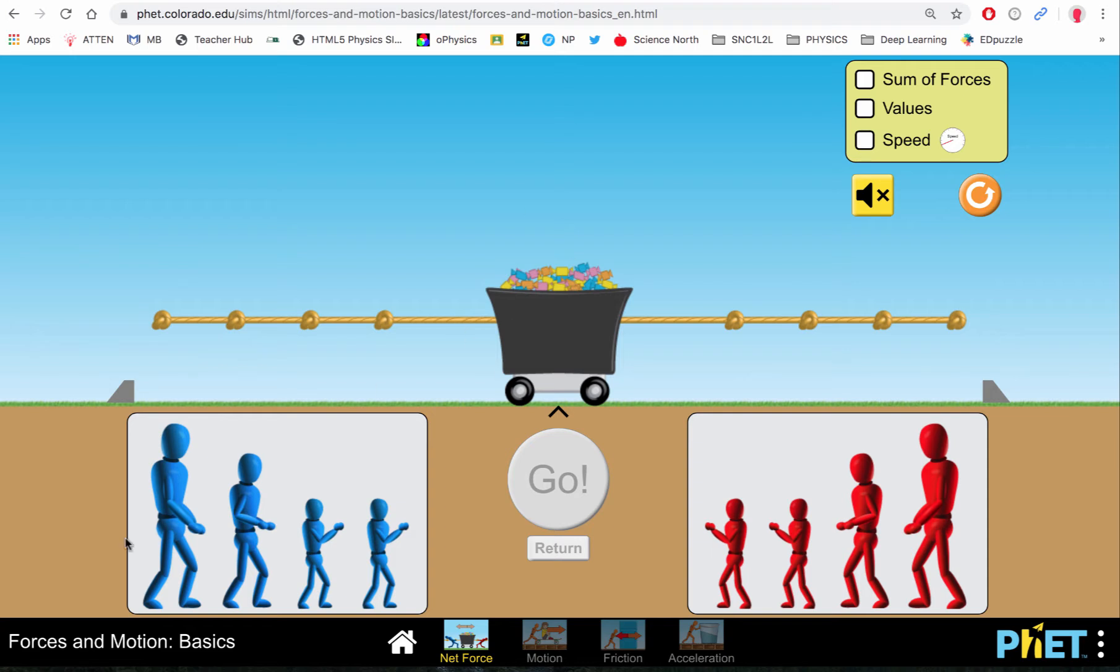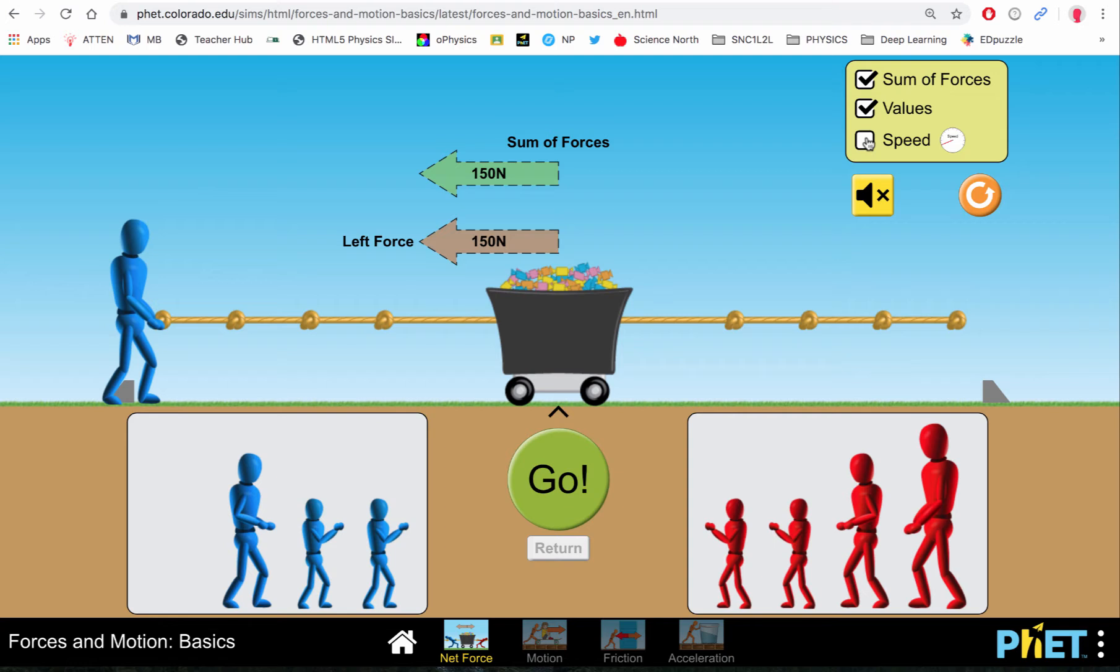So we've got a bin filled with some items and we can start adding people to basically a tug-of-war. The larger the person, the larger the force they're going to be able to apply. So I'm just going to toggle these. As it stands right now, we've got a 150 Newton force towards the left, and if I click go, obviously the bin is going to move towards the left.